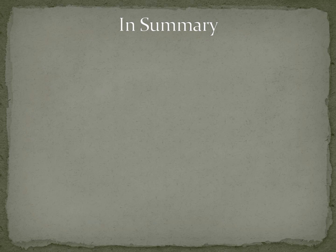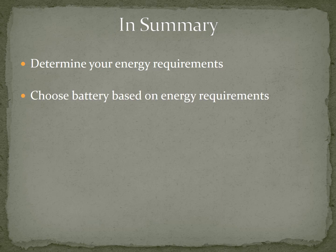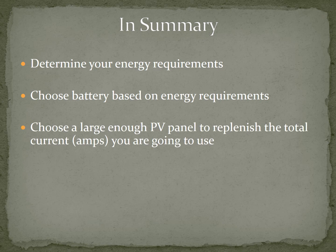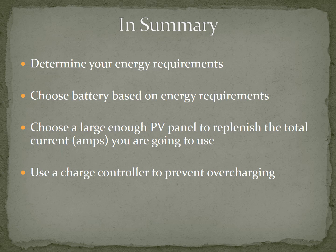In summary, when you look at solar power, determine your energy requirements, choose a battery based on those requirements, and choose a large enough solar panel to replenish your total current usage. The foldable panels from PowerFilm Solar run just over $10 a watt — 30-watt panels go for about $350 and 60-watt panels about $650 on Amazon — but they are small, fold up nicely into a small container, and are very easy to use. Make sure you use a charge controller to prevent overcharging your batteries.